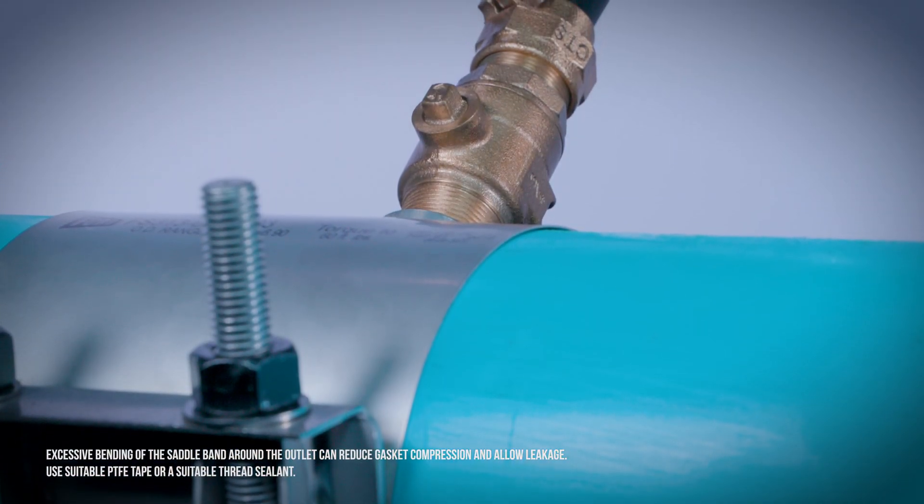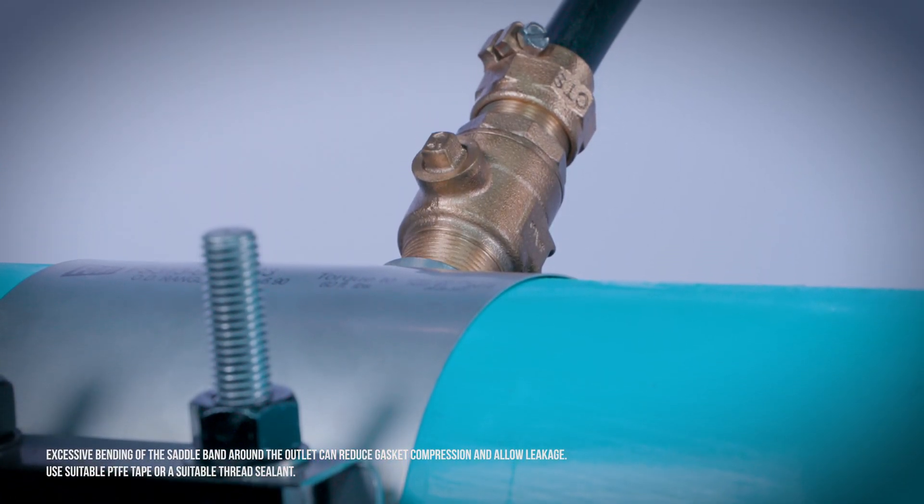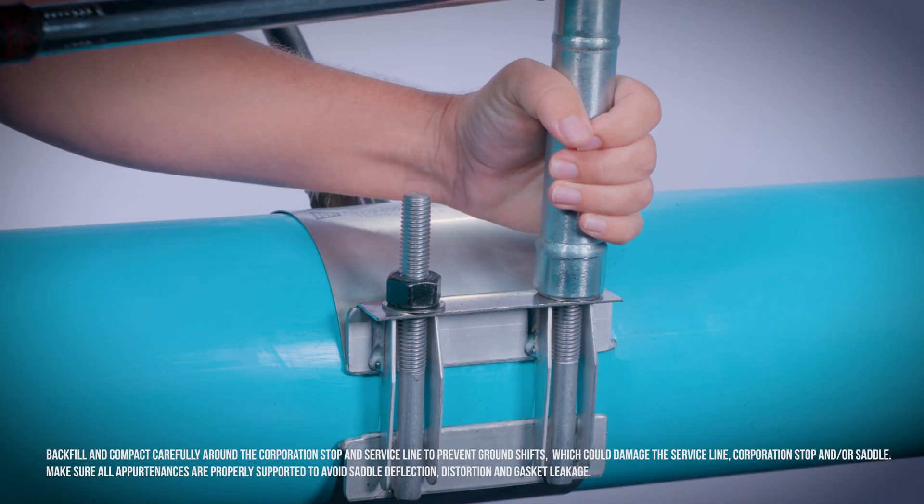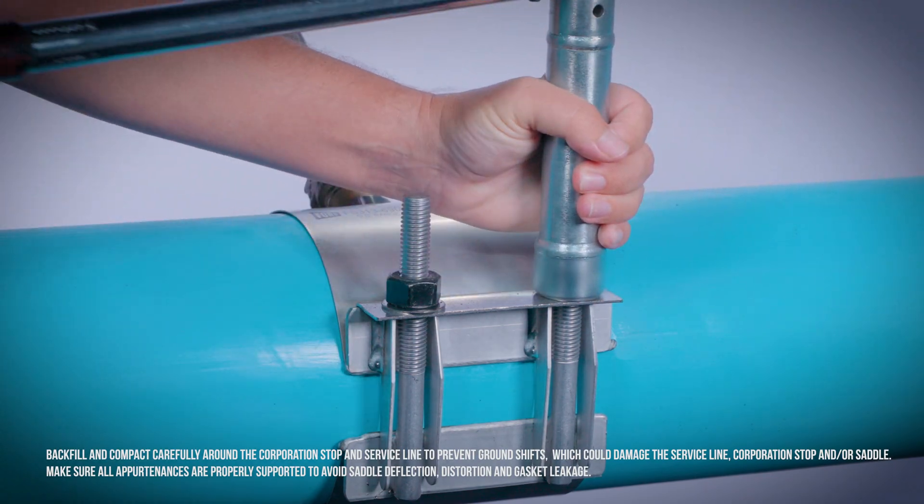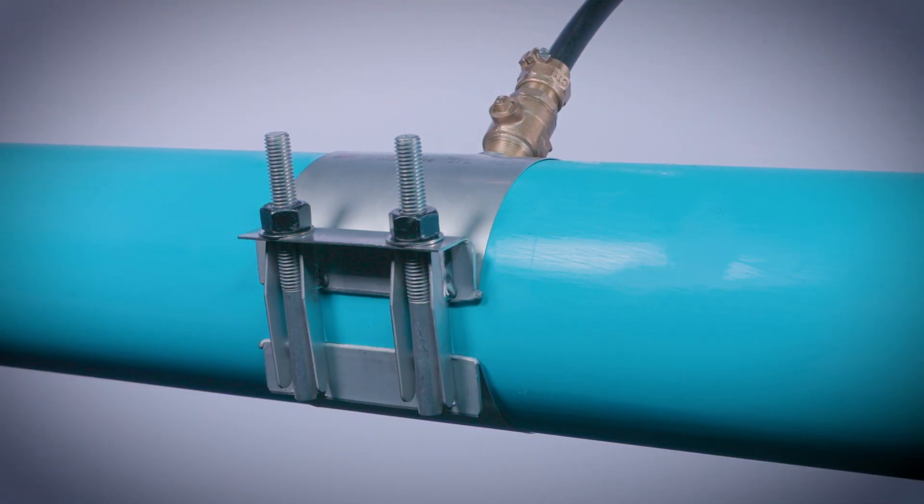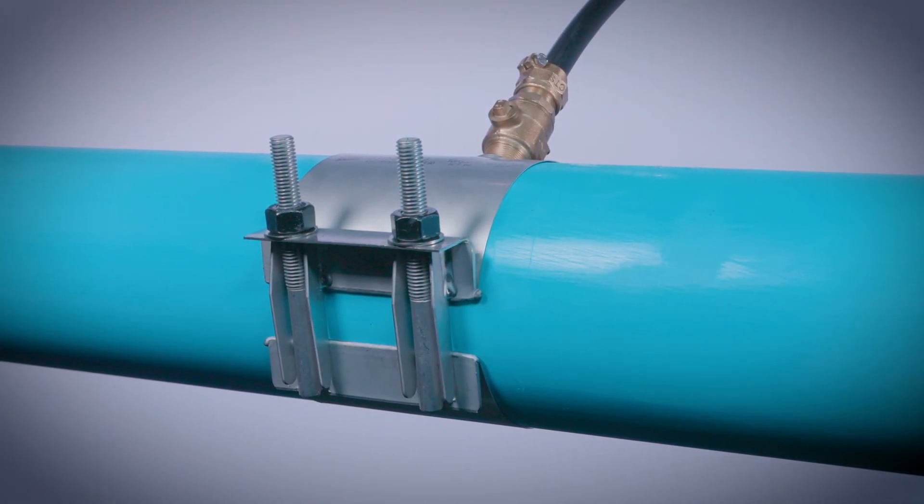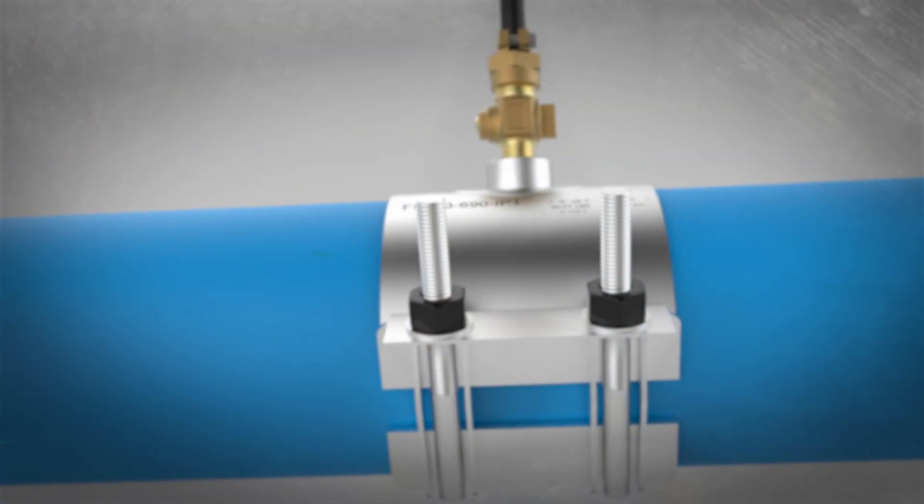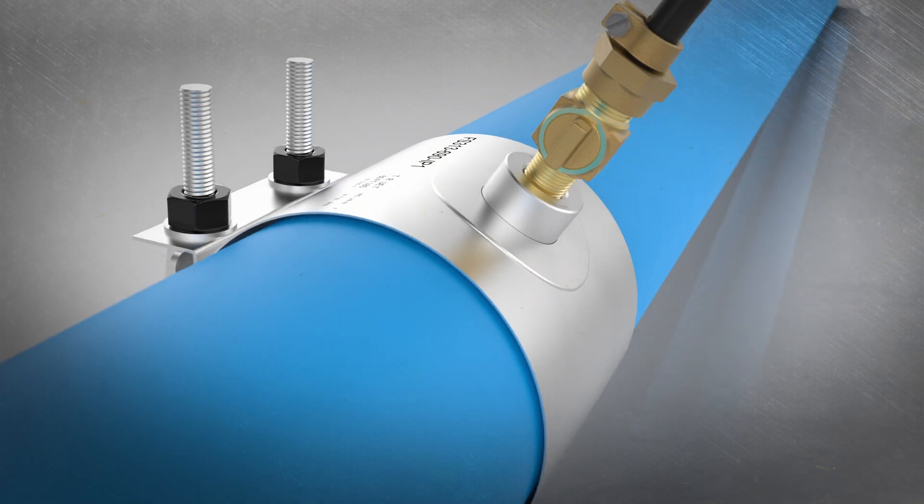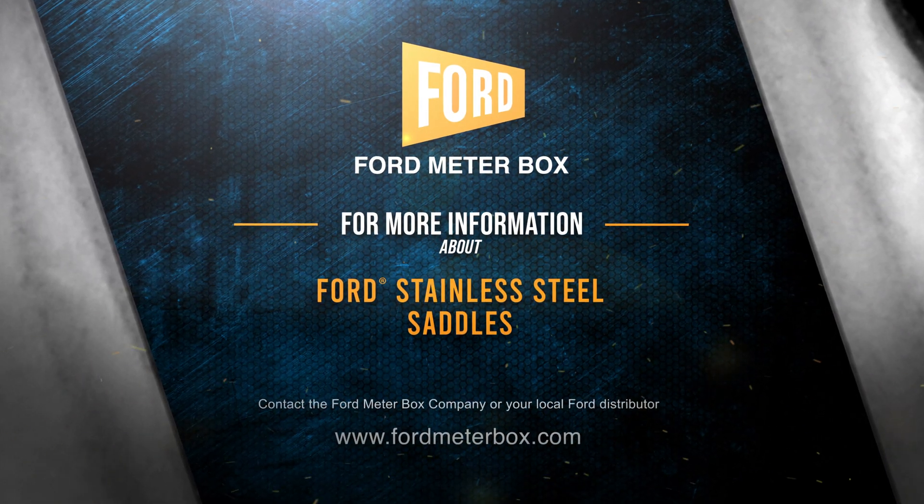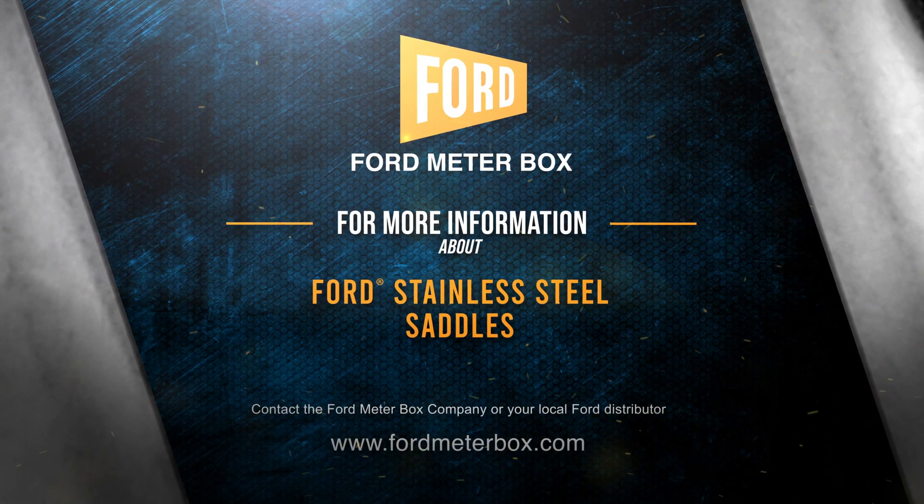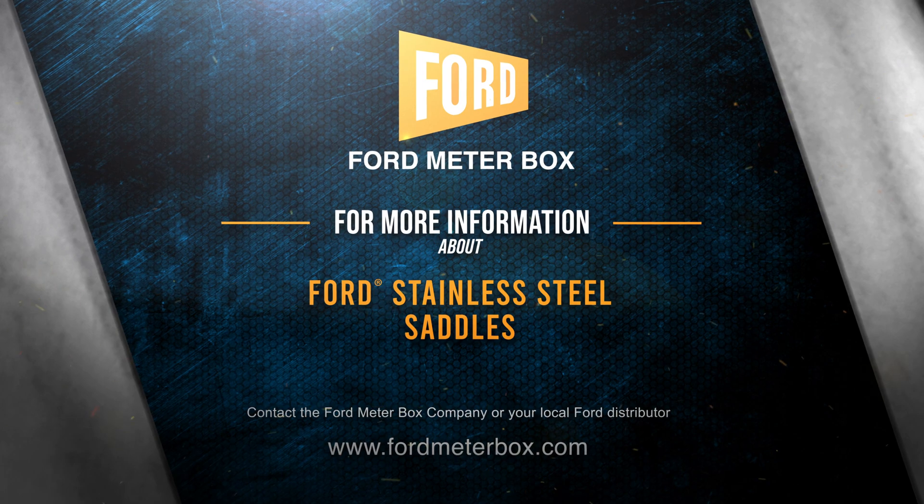Install the corporation stop, tap and service line connection. Re-tighten the nuts and check for leaks before backfilling. The installation is now complete. With careful design and high quality materials, Ford Stainless Steel Saddles offer long-lasting and secure installations for your service line connections.